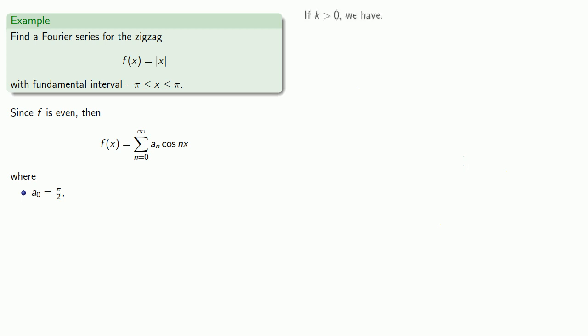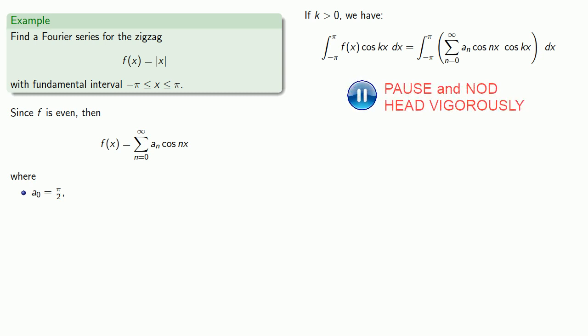What if k is greater than zero? We'll take our function and multiply by cosine of kx and we'll integrate from minus π to π. Assuming convergence, we're allowed to switch the integration and the summation. And remember, the reason that we're able to find the Fourier coefficients is that for almost every value of n, this integral will be equal to zero. The only value of n that doesn't cancel out is going to be for n equals k. And so this infinite series collapses down to just the integral from minus π to π, aₖ, cosine kx, cosine kx. And that's just equal to π times aₖ.